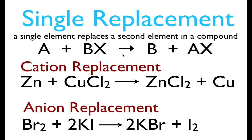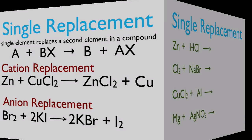There are two different kinds of single replacement reactions: cation replacement and anion replacement. Cations are our positively charged ions — metals. In cation replacement, a metal replaces a metal; for example, zinc replaces copper, giving us copper by itself and zinc chloride. In anion replacement, our anions are negatively charged non-metals. For example, bromine kicks out iodine, giving us iodine by itself and potassium bromide.